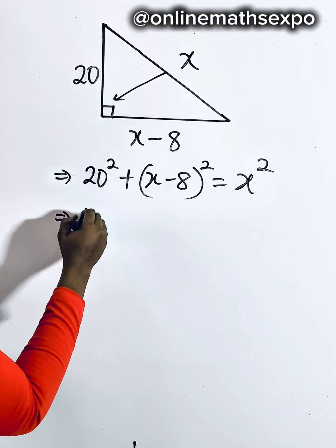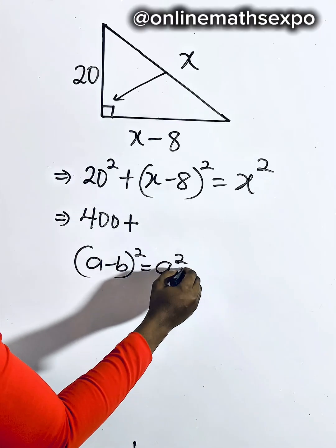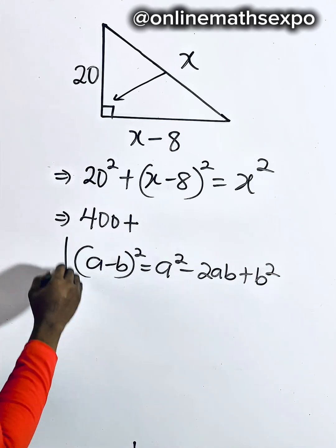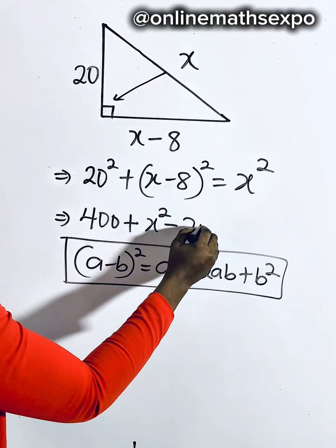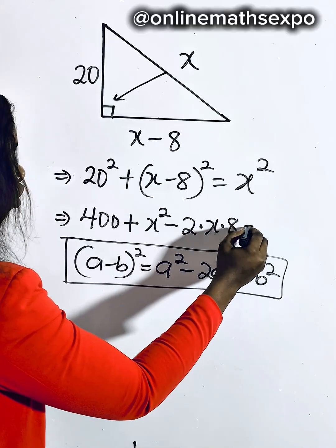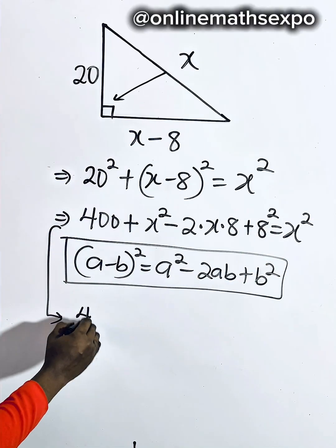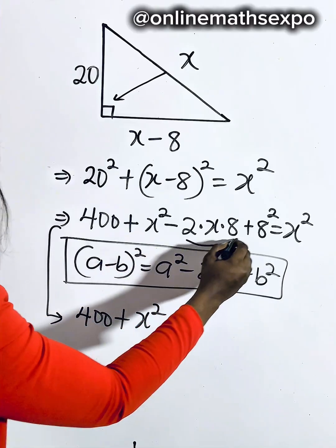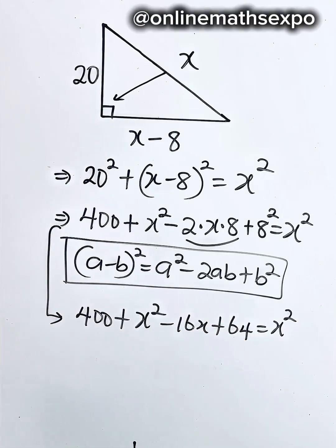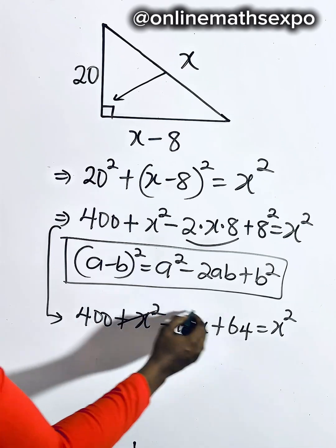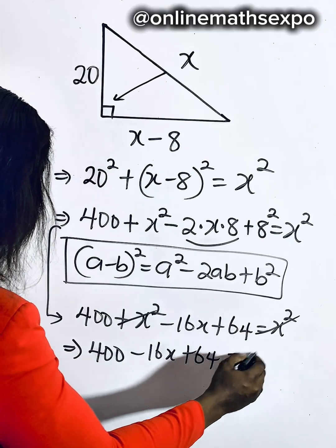So let's simplify. 20 squared gives us 400. For the expansion, remember that (a minus b) squared equals a squared minus 2ab plus b squared. Applying this algebraic identity: we have x squared minus 2 times x times 8 plus 8 squared, equal to x squared. So from here we have 400 plus x squared minus 16x plus 64 equals x squared. The x squared terms are on both sides, so they cancel, giving us 400 minus 16x plus 64 equals 0.